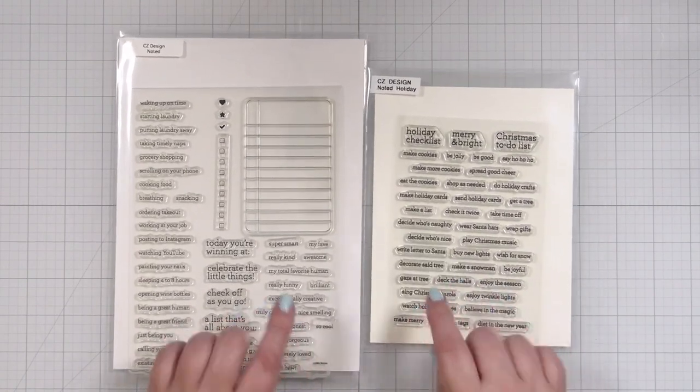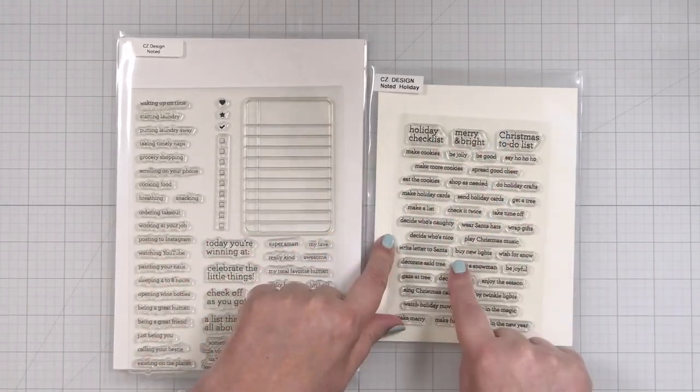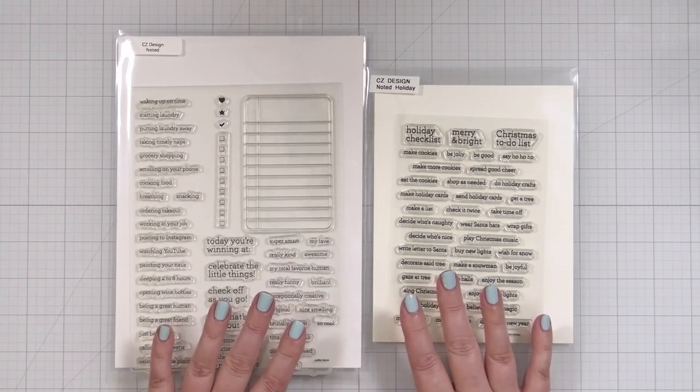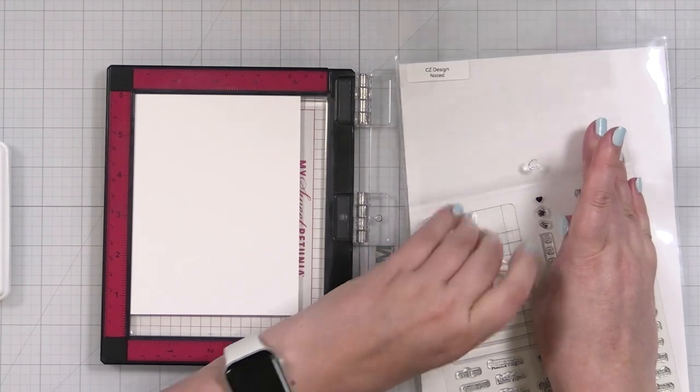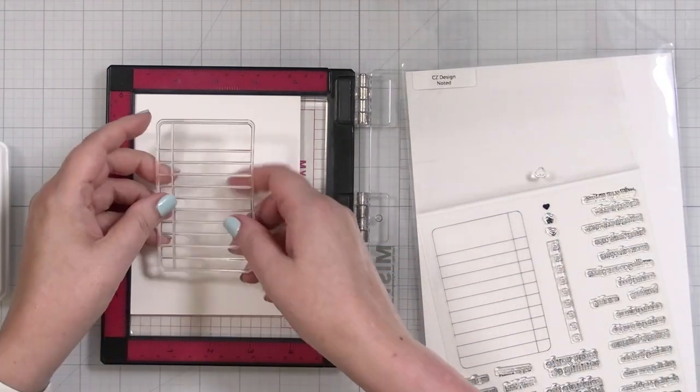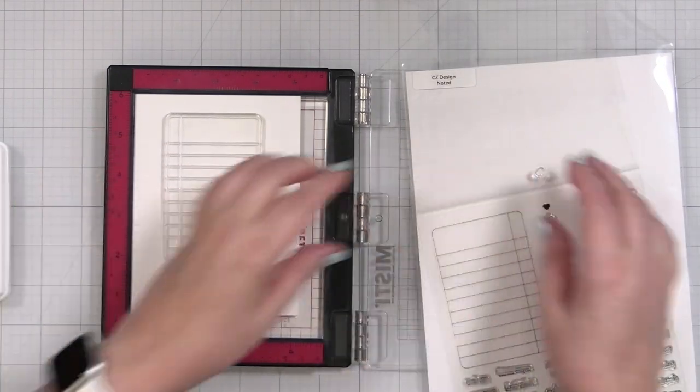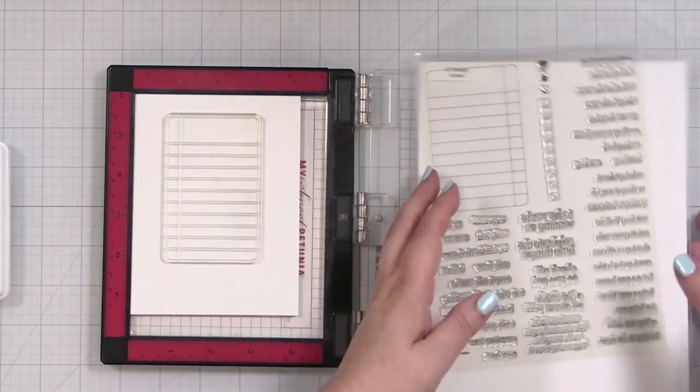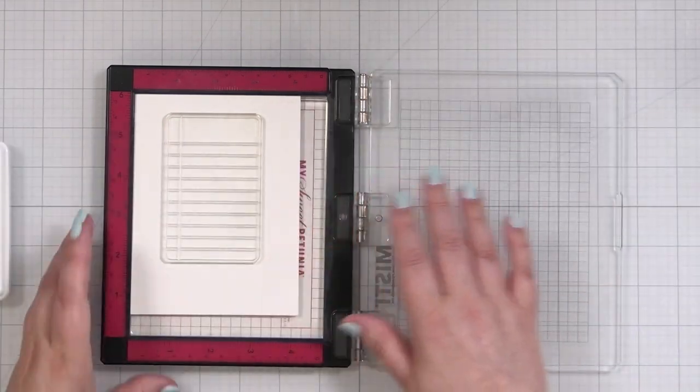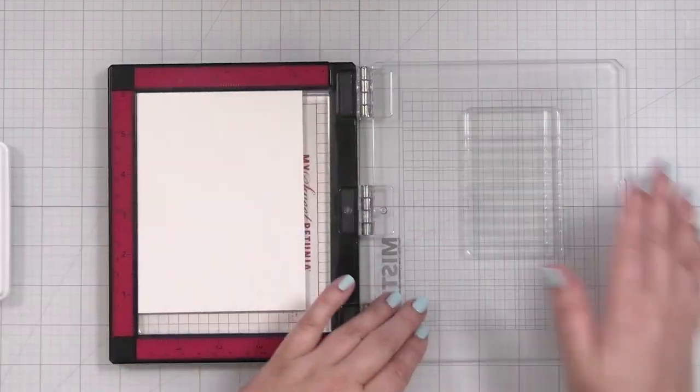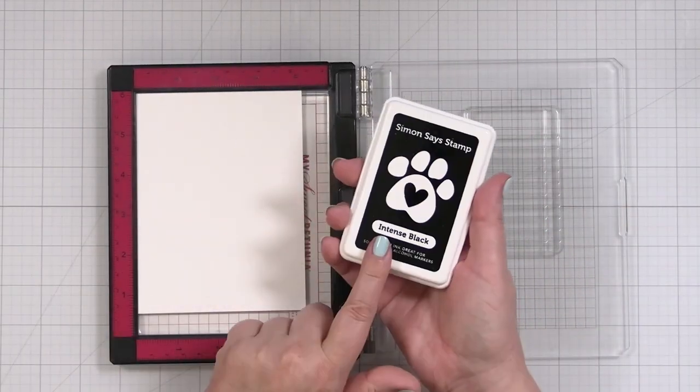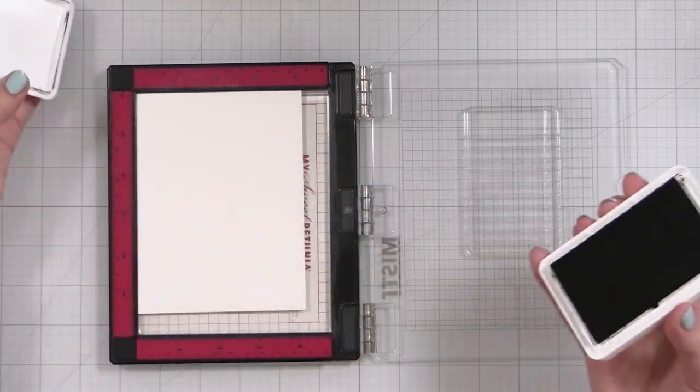But today I want to show you how you can take this stamp, the holiday items, and turn it into a quick tag. I'm going to take the little list out and pop it right here onto some Neenah Classic Crest. This is the Solar White 110 pound, and we're just going to stamp one using some Simon Says Stamp Intense Black ink.